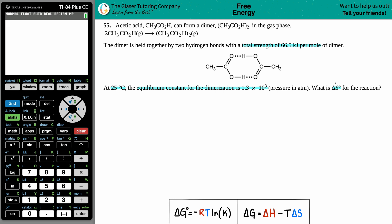They give us the total strength of the dimer, they tell us it's at 25 degrees Celsius, so we're at room temp, and they give us the equilibrium constant. Now we're trying to solve for ΔS, so ultimately I think of formulas in which I have ΔS, and that's this formula: ΔG = ΔH - TΔS.